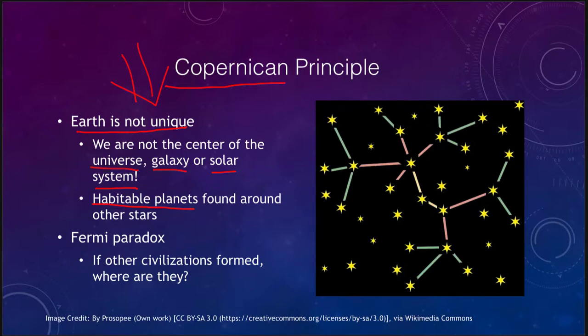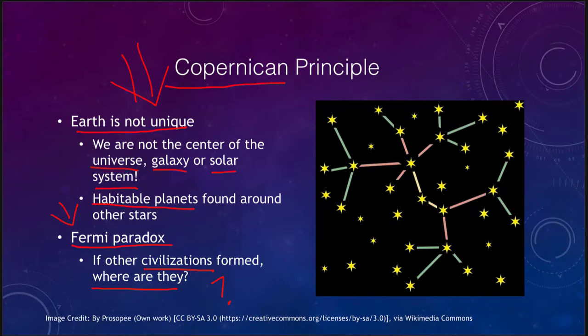In fact, we've detected a number of Earth-type planets; we just don't know whether life has evolved elsewhere. This leads right to a paradox we call the Fermi paradox, proposed by Enrico Fermi. He suggested that if other civilizations formed, why haven't we found them yet? Why are they not here visiting us?